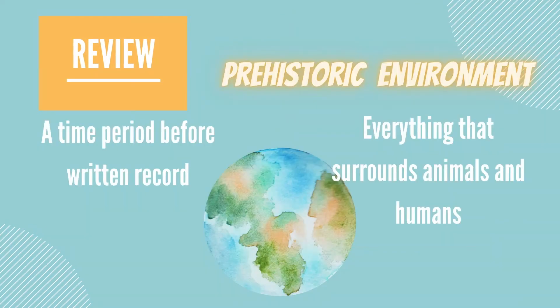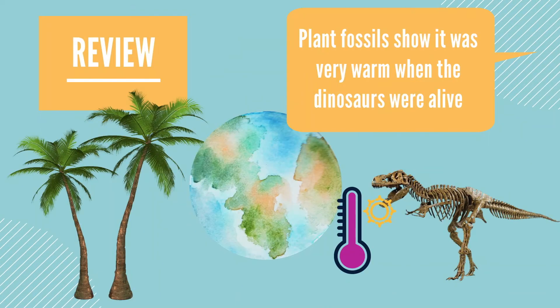The prehistoric environment is what surrounds past living things before humans were alive. An example of a prehistoric environment would be the time period of dinosaurs, including the plants and animals. We saw examples of different kinds of fossils and learned that these fossils can tell us about past temperatures. For instance, palm tree leaves and fern leaves found during the period of dinosaurs show that the Earth was much warmer millions of years ago than it is today.